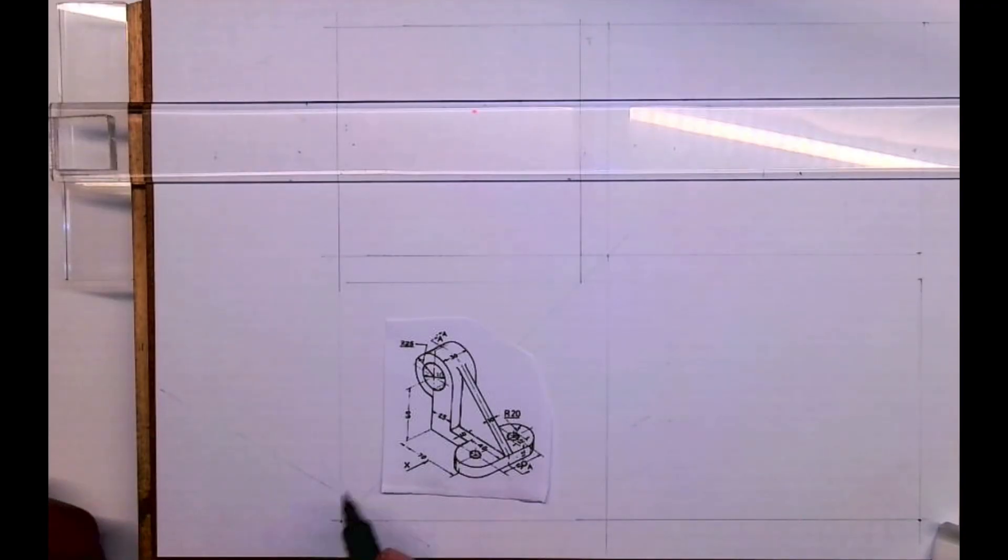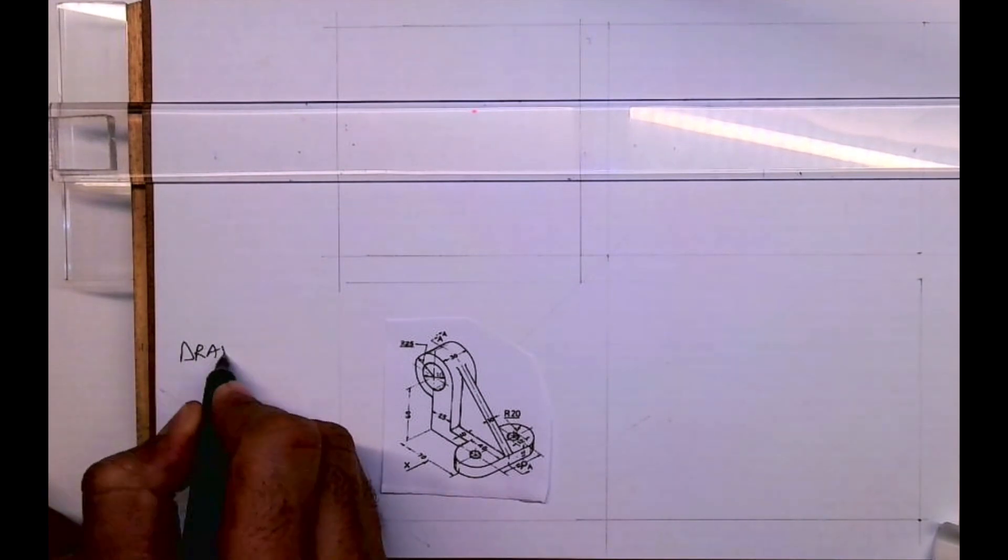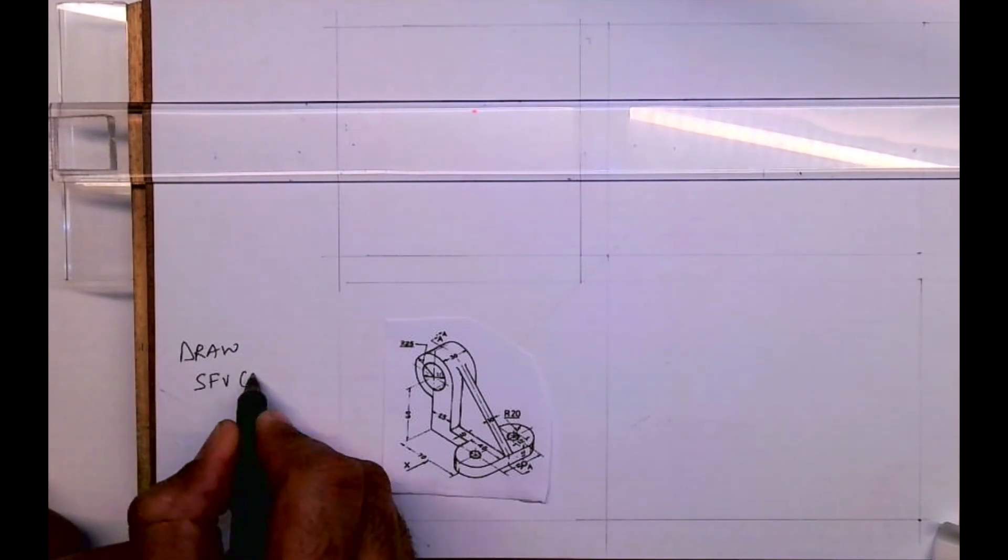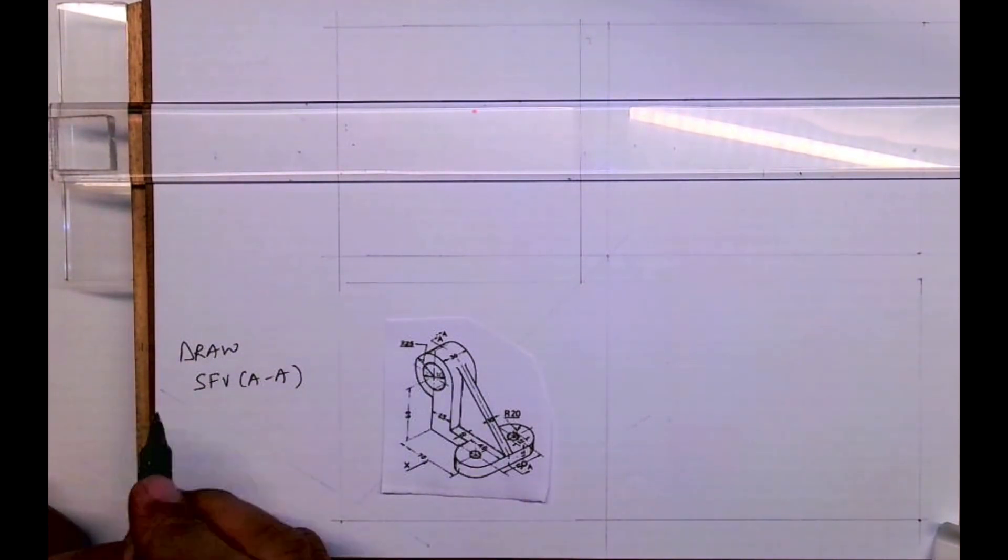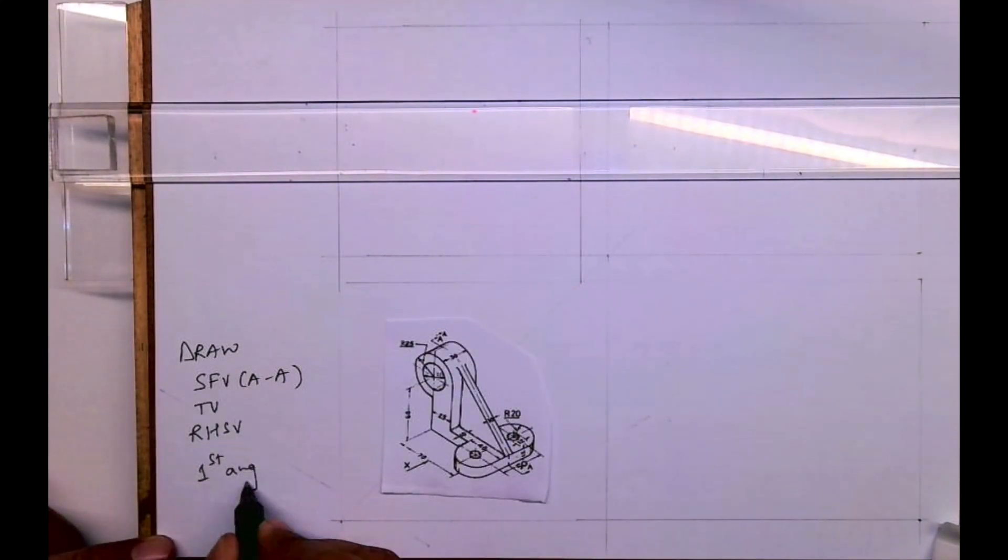Welcome to technical drawing. Today we'll see this sum in section orthography. We need to draw sectional front view along AA, then we need to draw top view and right hand side view in first angle projection.